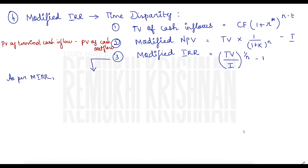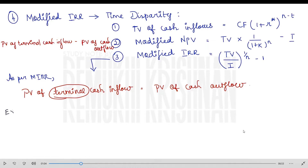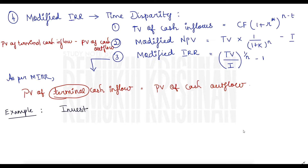At modified internal rate of return, present value of terminal cash inflows equals present value of cash outflow. Instead of present value of cash inflows, we use present value of terminal cash inflows. The one common step under both methods — modified NPV and modified IRR — is computing the terminal value. Let's understand this better with an example.